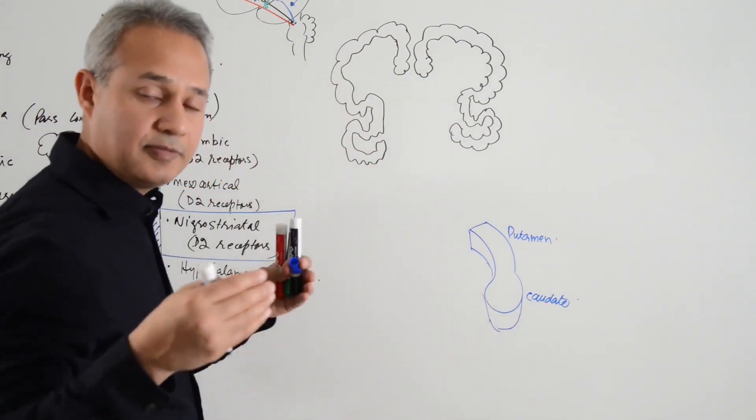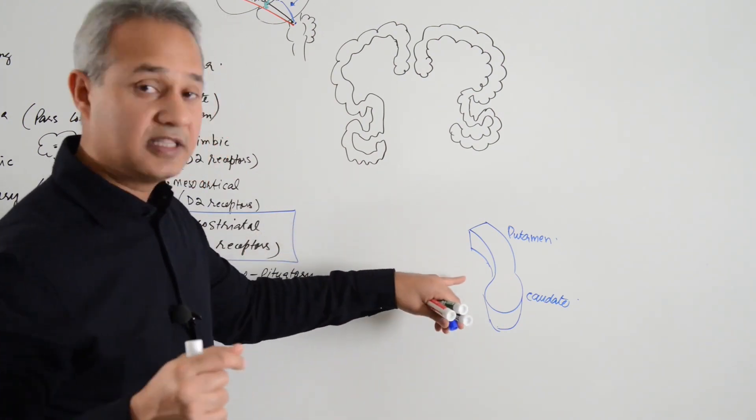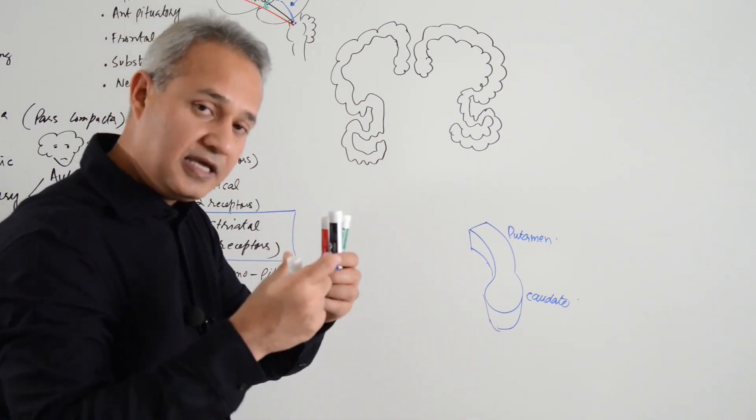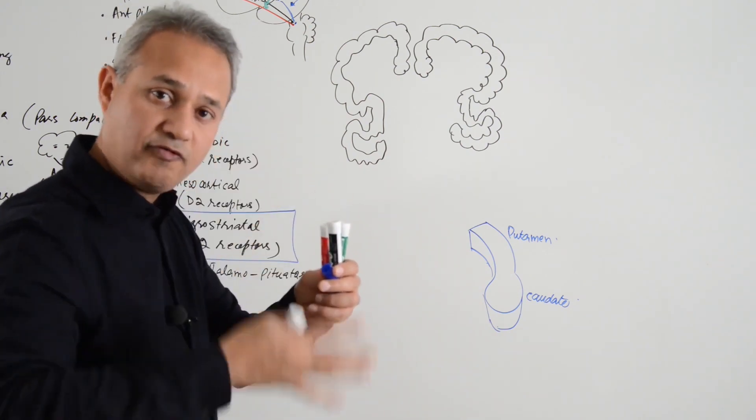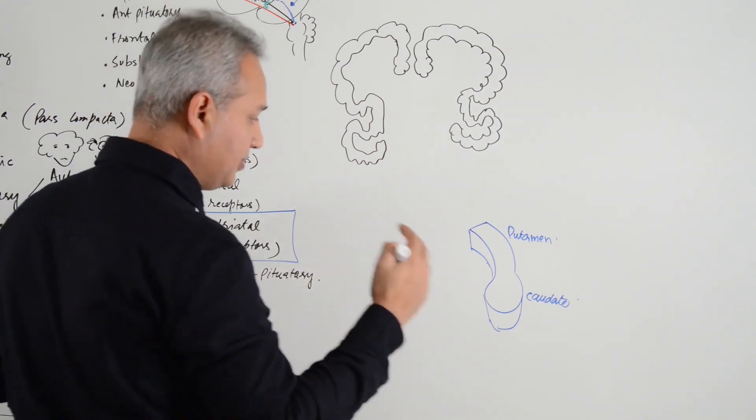You know that the caudate and putamen are actually connected in the anterior part and that is why they are also called neostriatum. The area where they are connected is perforated by the internal capsule fibers. That is why striatum or a striatal appearance.